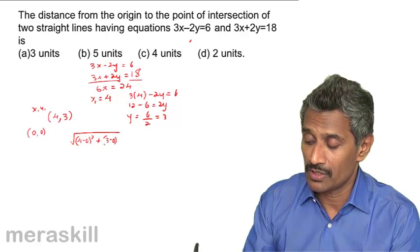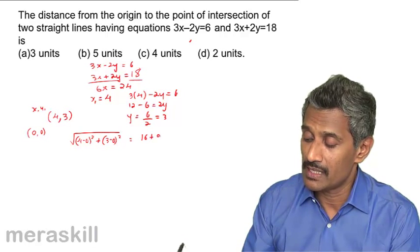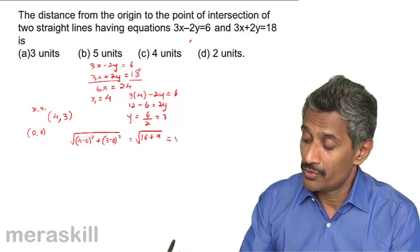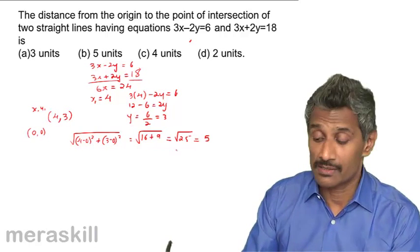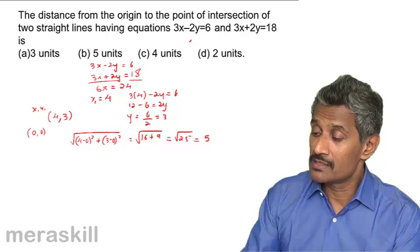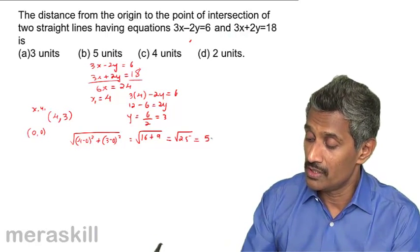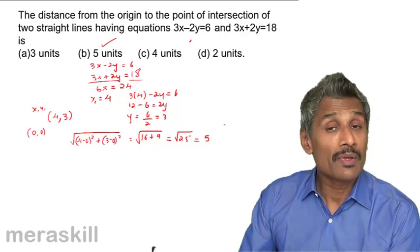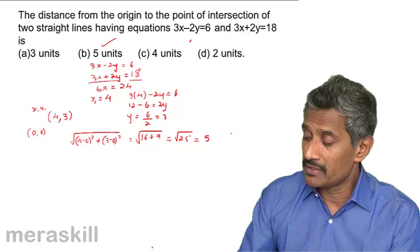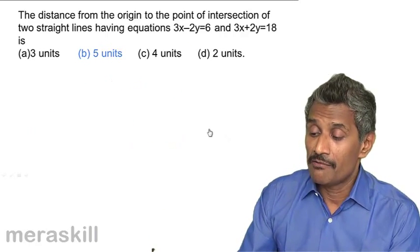Which is 4 squared, that's 16, plus 9. So you get root 25, which is 5 units. The distance between the point of intersection of these two lines and the origin is 5 units. This way, you just need to interpret it in a pictorial form and you will get it. And yes, the answer is 5 units.